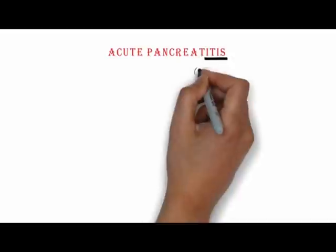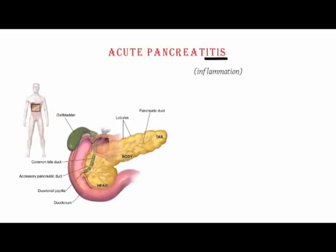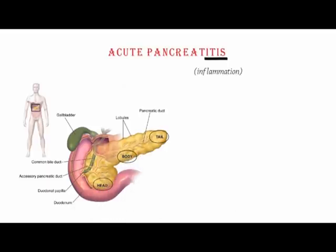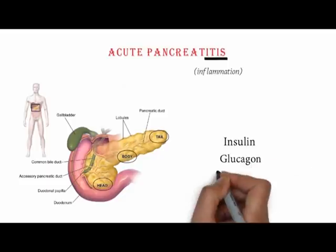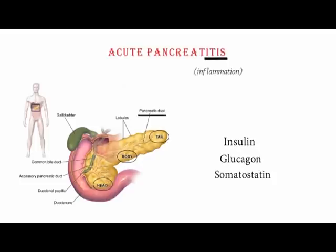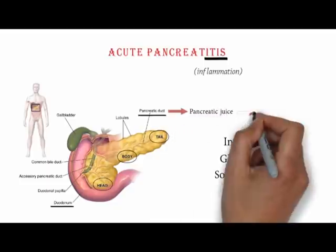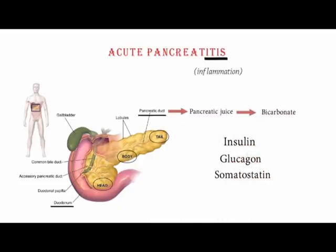As this name has '-itis' in it, that means inflammation of pancreas. To start with, let's first discuss the basics of pancreas. It is located in the abdominal cavity behind the stomach, and it has a head, body and a tail. It is an endocrine gland producing several important hormones including insulin, glucagon, and somatostatin. You can see a pancreatic duct running throughout the body and finally opening up into the duodenum. This pancreatic duct has pancreatic juice rich in bicarbonates which neutralize the acidity of contents moving in from the stomach.